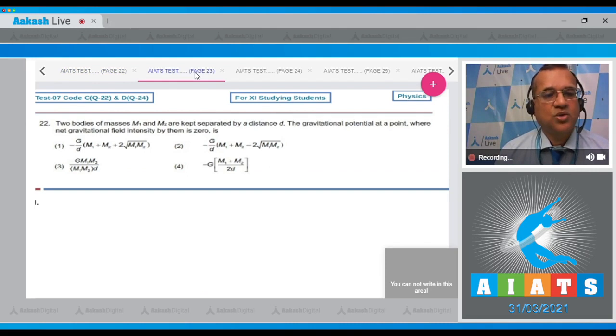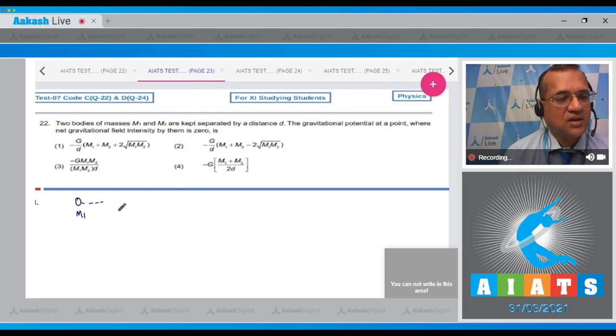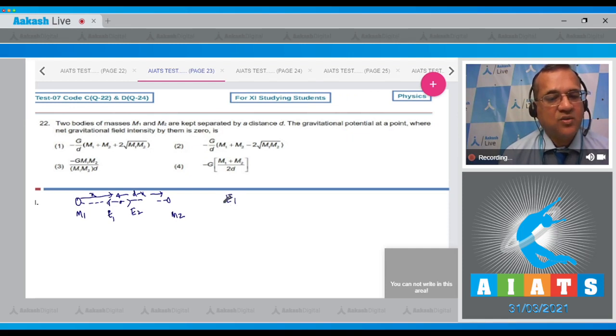Question number 22. Two bodies of masses m1 and m2 are kept separated by a distance small d. The gravitational potential at a point where net gravitational field intensity by them is 0. Now dear students, let's first calculate the location where the gravity because of both masses becomes 0. So this is mass m1 and another mass is m2. Let's say from here at the distance of x, the attraction on this direction gravitational intensity and on this side vanishes, this distance is d minus x. The both intensities are equal and opposite. So E1 has the value equal to E2.